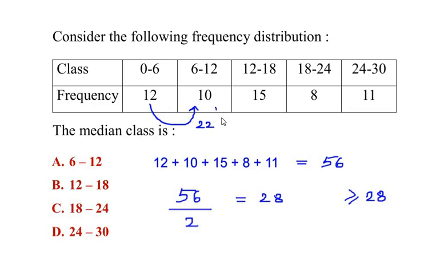Now again let us add 22 plus 15, that will give us a total frequency of 37. Now 37 is much greater than 28, so we are going to consider 12 to 18 as a median class. So it is going to be option B.